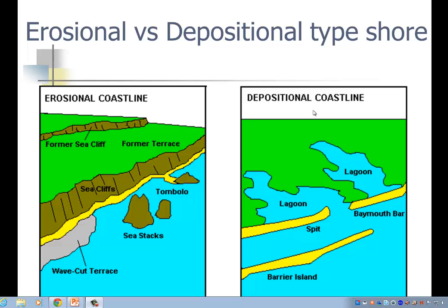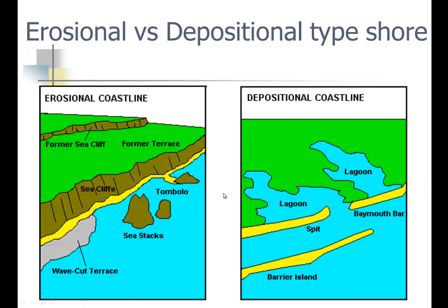Then we have depositional where it actually looks like water has gone over onto land. We have relatively nice sandy beaches, lagoons, barrier islands, sand spits, bay mouth bars, and things like that.